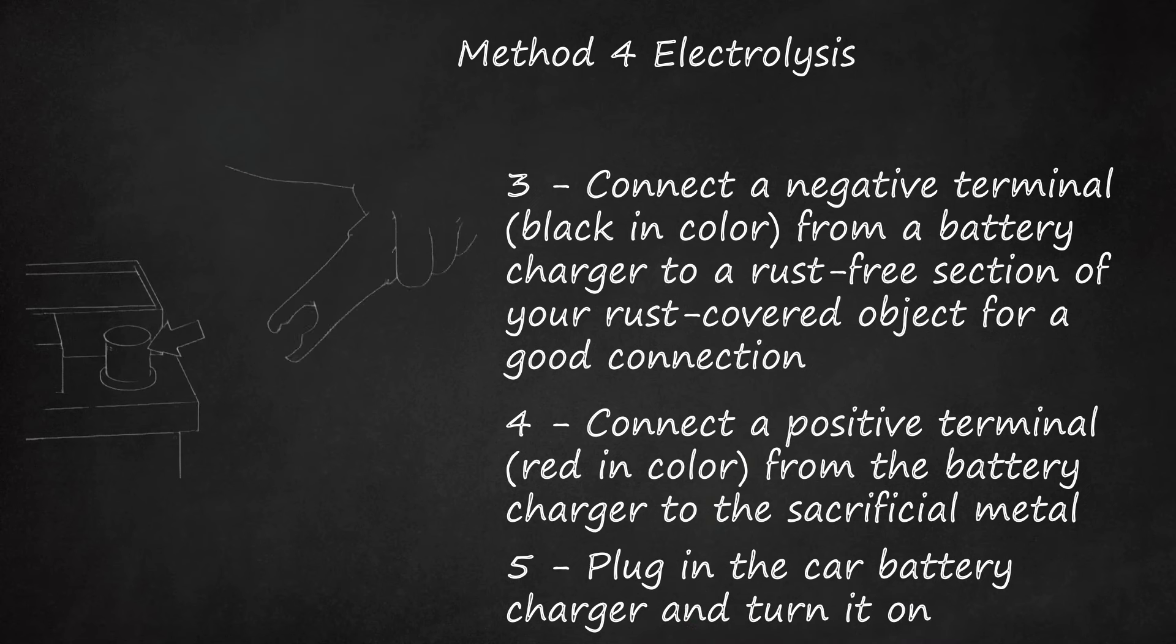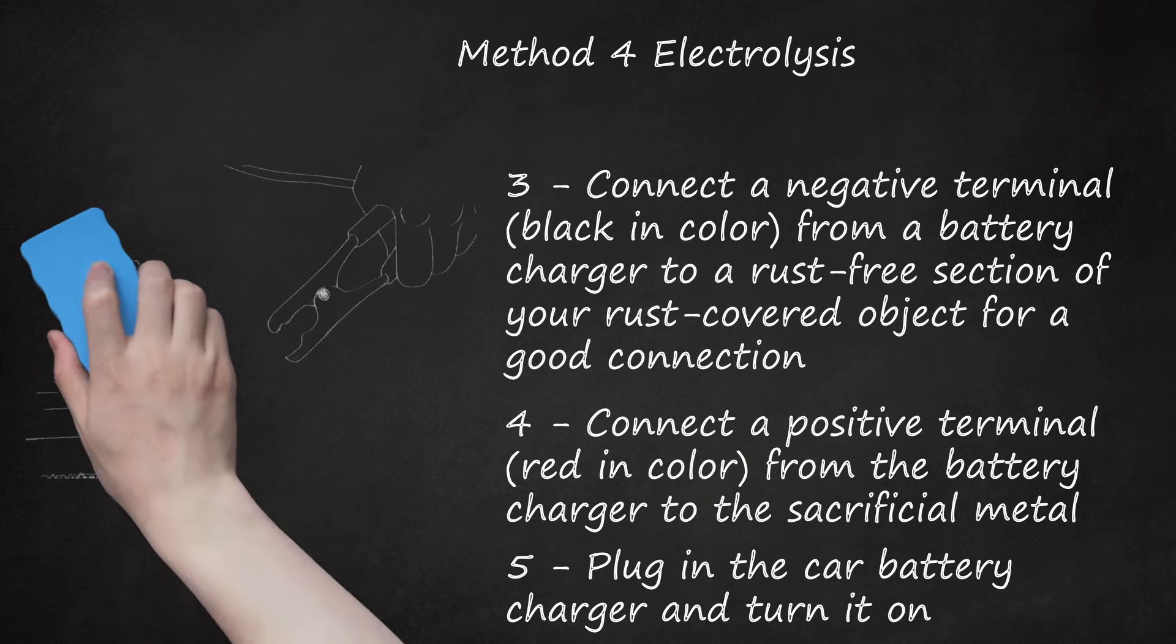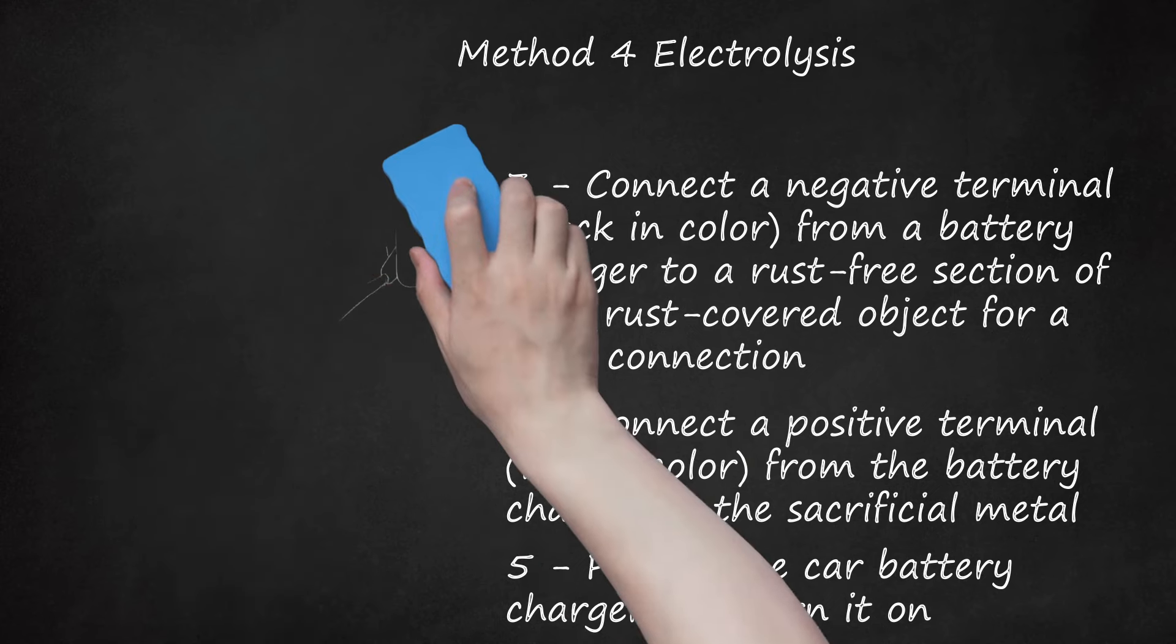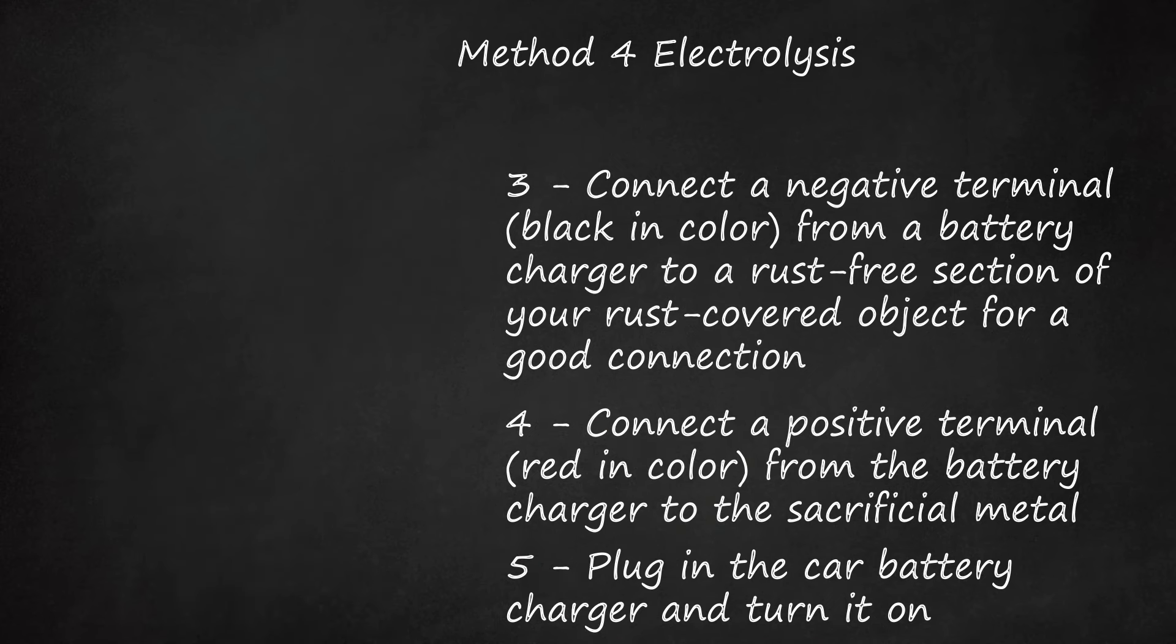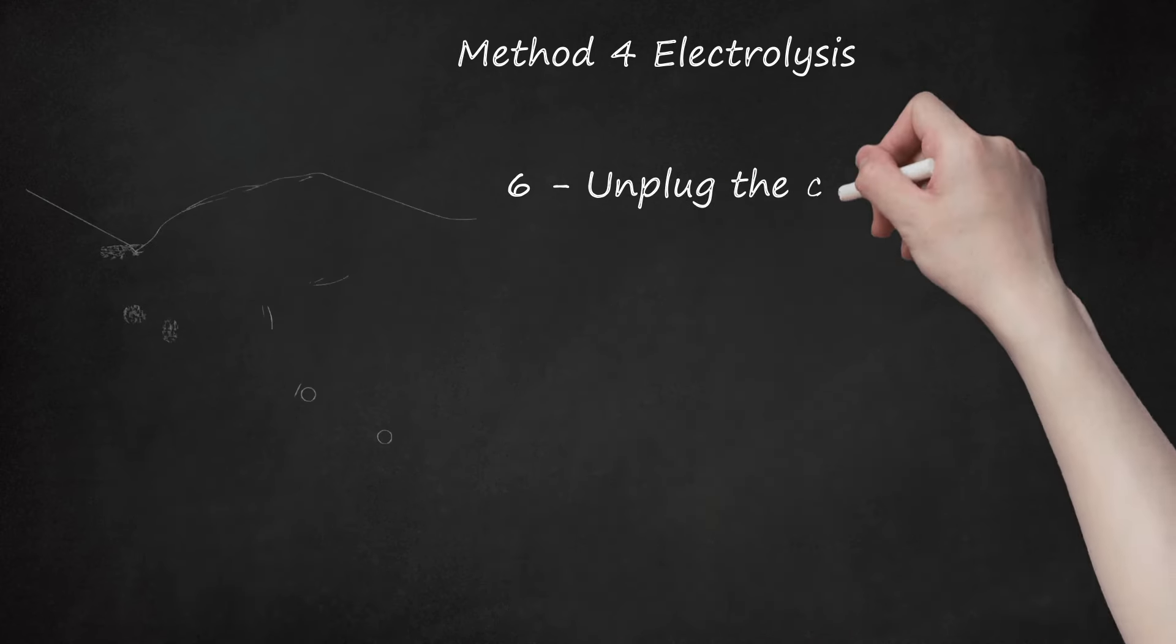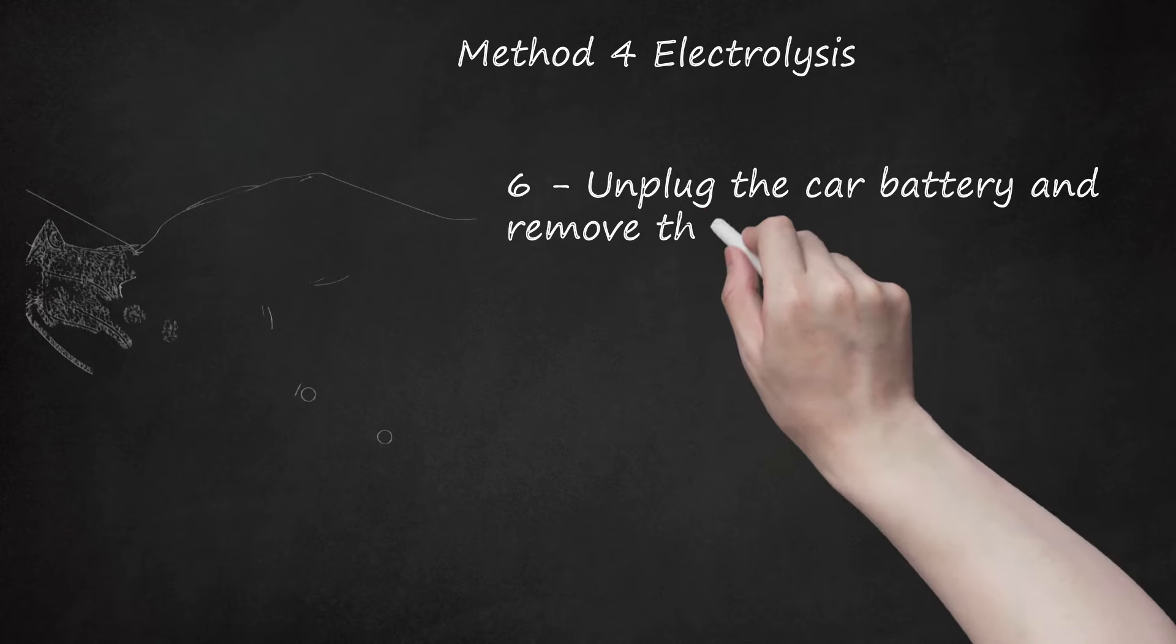Fifth, plug in the car battery charger and turn it on. The electrolysis process will gradually start working away at the rust. Let it sit for 12-20 hours. Caution: if you ever want to check the status of your rusted object, be sure to turn off and unplug the battery charger first. You will see bubbles rise to the surface and muck gather at the surface. Both of these things are normal.